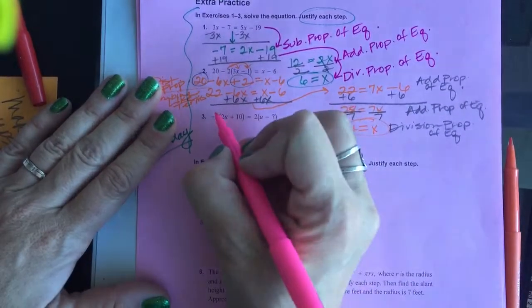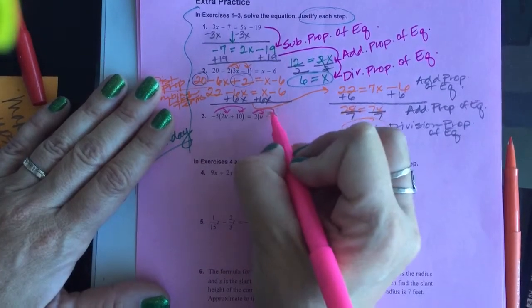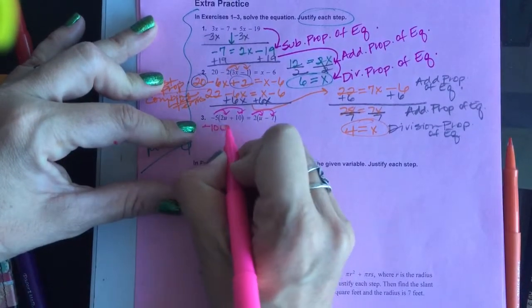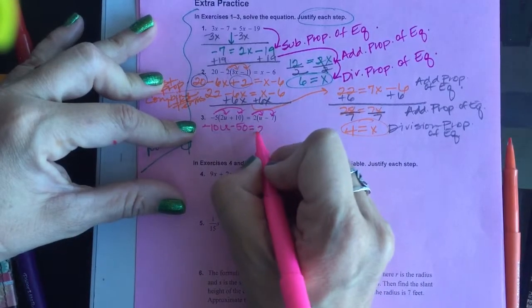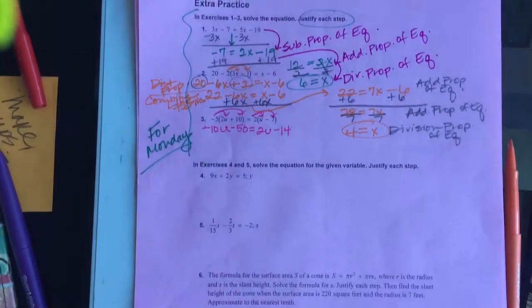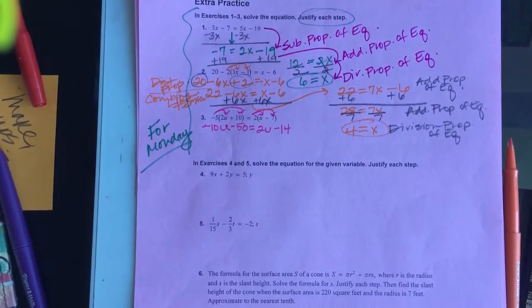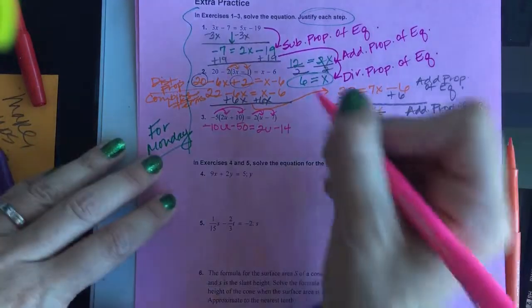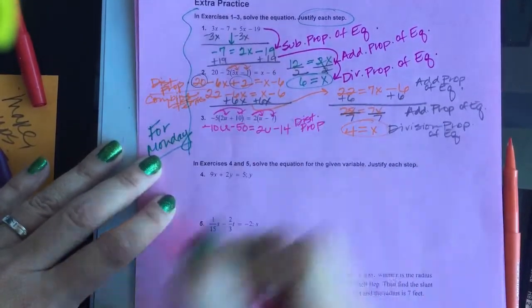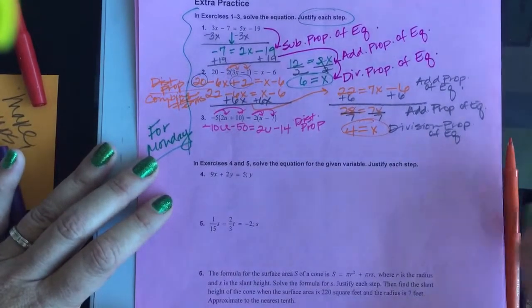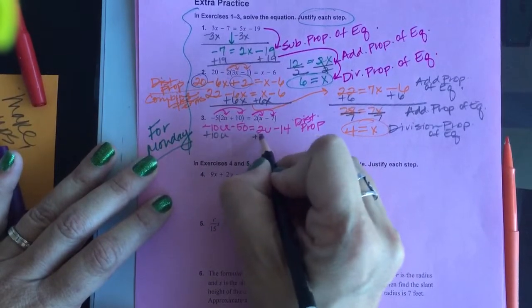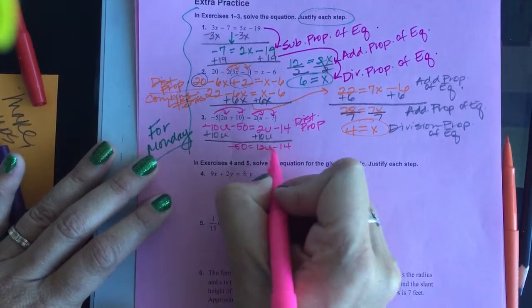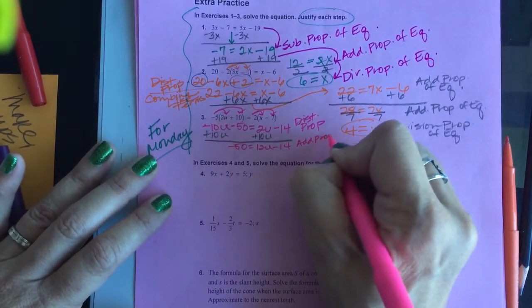Now, I'm going to go on here in number 3, and I have distributive on both sides of this. So when I distribute negative 5 times 2u, negative 10u minus 50, 2u minus 14. Next to that, I need to write down that it's a distributive property. Whatever you have to do to fix yours up and make sure that you're all justified and whatnot, do it. I don't have any more simplifying to do. I can just start undoing. My best choice for this would be to add 10u's. I want to get that negative 10u out of there. I'm going to add 10u's to both sides. So negative 50 equals 12u minus 14. That was an addition property of equality.